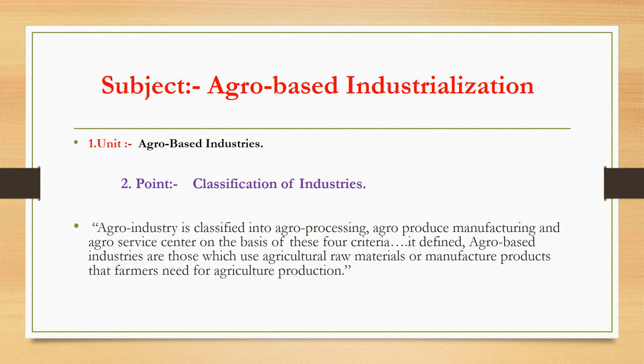Agro-industries are classified into agro-processing, agro-produce manufacturing, and agro-service centers on the basis of four criteria. Agro-based industries are defined as those which use agricultural raw material or manufacture products that farmers need for agricultural production. Industries are part of secondary activities, which convert raw material into products of more value to people. Industry refers to economic activity concerned with the production of goods, extraction of minerals, and provision of services.